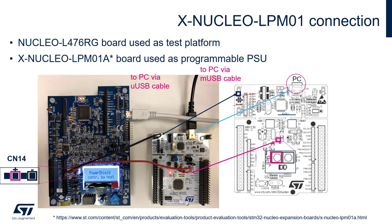Let's start from our hardware setup. Within our current measurement experiments we will use the following configuration: XNucleo LPM01A board with a micro USB cable to connect this board to PC — this is the big board on the left side. Then as a target board we will use the Nucleo L476RG board with a mini USB cable to connect it to PC — this is on the right side of the photo.